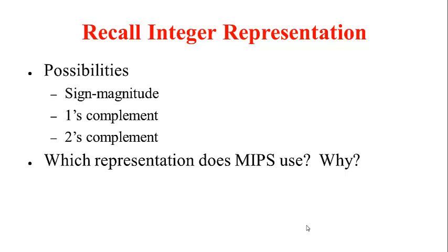To help you recall these representations, here are a few questions. How would you negate a number in sign magnitude representation? How will you negate a number in one's complement representation? And how will you negate a number in two's complement representation? What are the advantages of two's complement over the other two? MIPS uses the two's complement representation for integers due to its various advantages, such as a single representation for zero and uniform arithmetic for addition of signed as well as unsigned numbers.